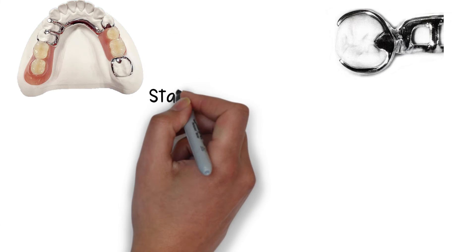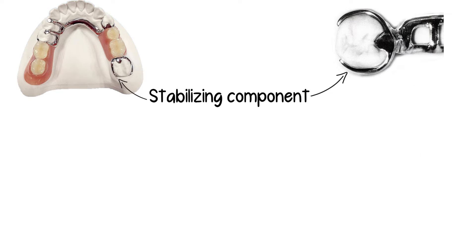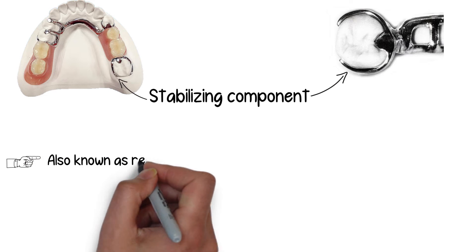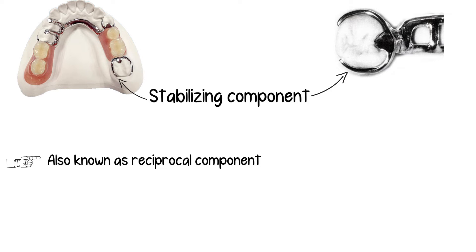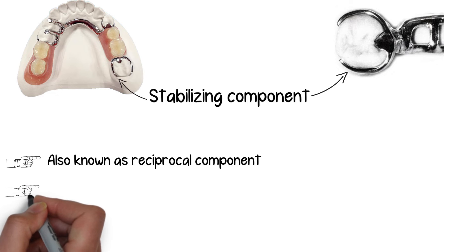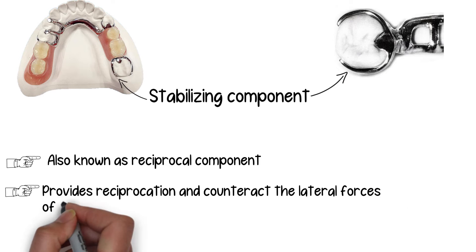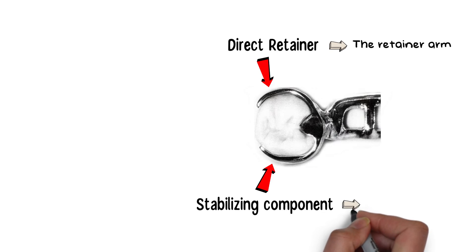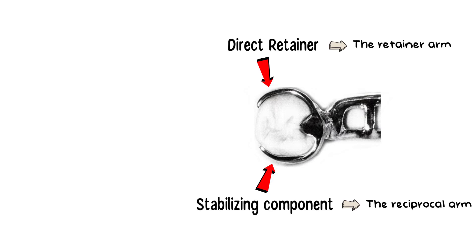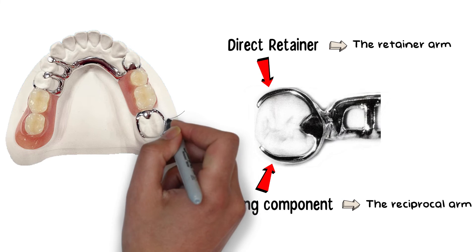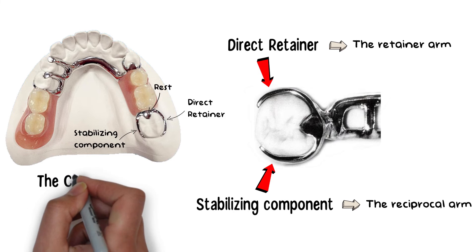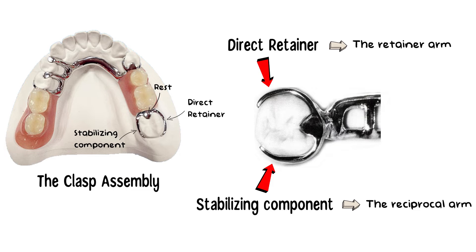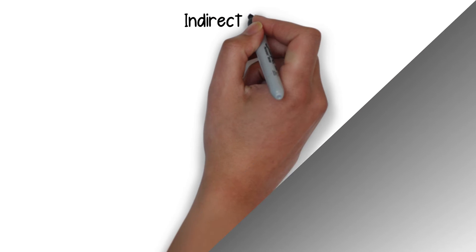The next part, closely related to the direct retainer, is the stabilizing component — also called the reciprocal component. Since the direct retainer, if applying continuous forces without any reciprocation, could cause unwanted orthodontic movement, the reciprocal component provides reciprocation and counteracts the lateral forces of the retentive arm functioning as a direct retainer. In short, the retentive arm applies retentive forces to keep the denture in place, while the reciprocal arm counteracts any harmful forces applied on the abutment tooth in the process. I will discuss the stabilizing and retentive arms in more detail in my clasp assembly video.